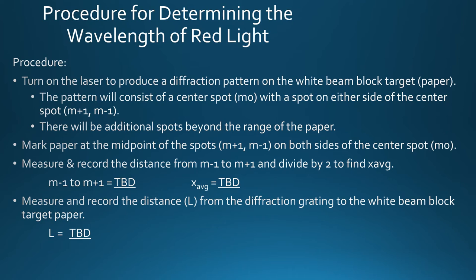Measure and record the distance from M-1 to M+1 and divide by 2 for finding x average. As you can see there, we are yet to determine what those are. And then we measure and record the distance L from the diffraction grating to the white beam block target paper.